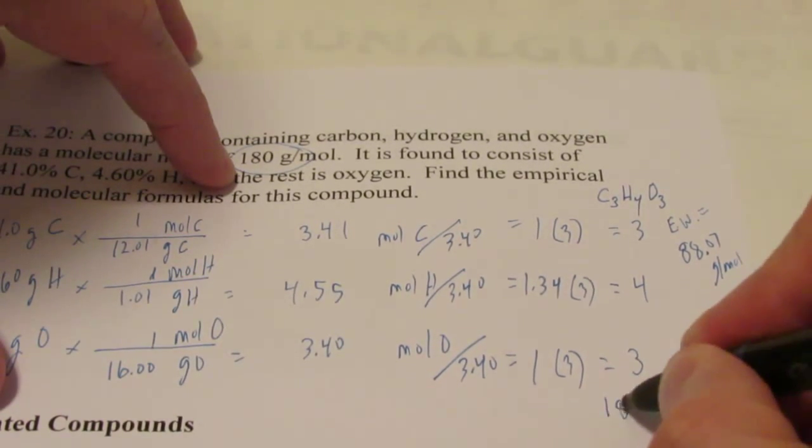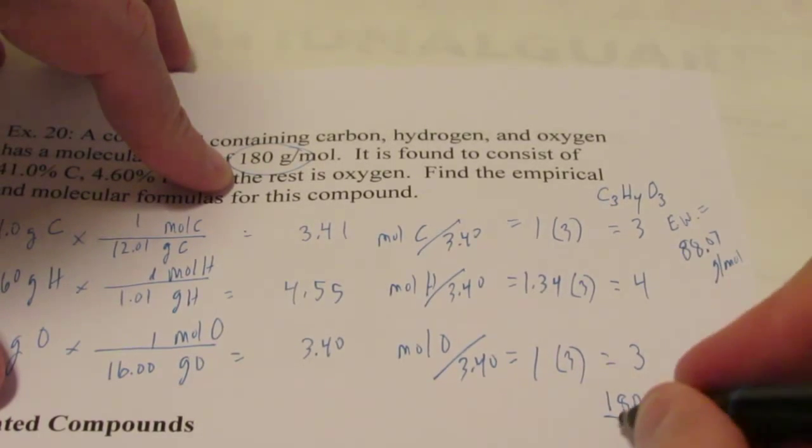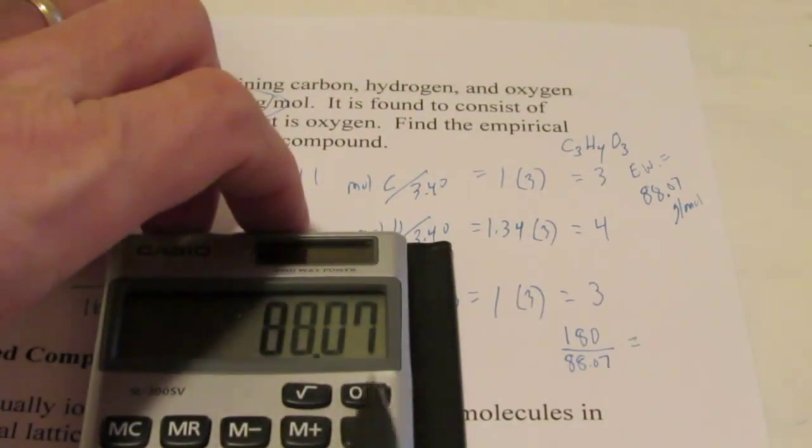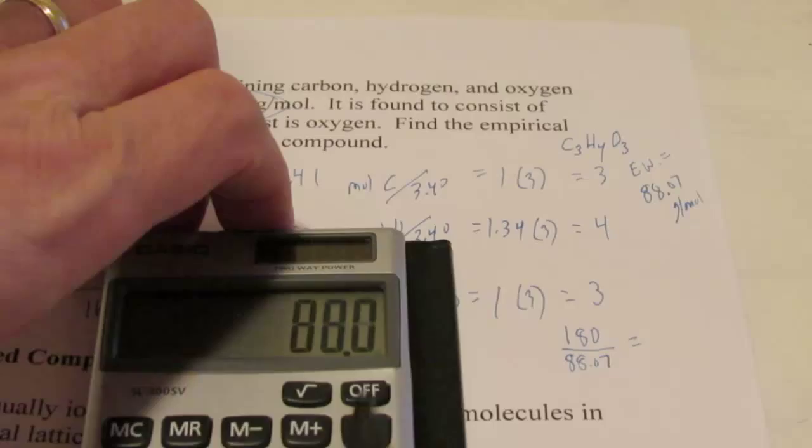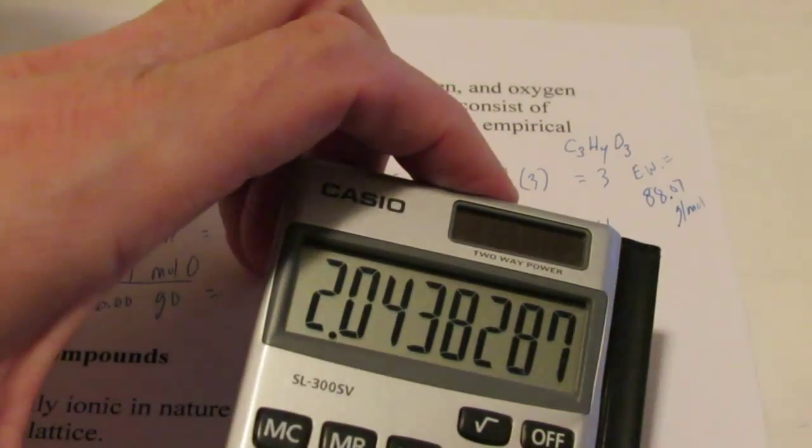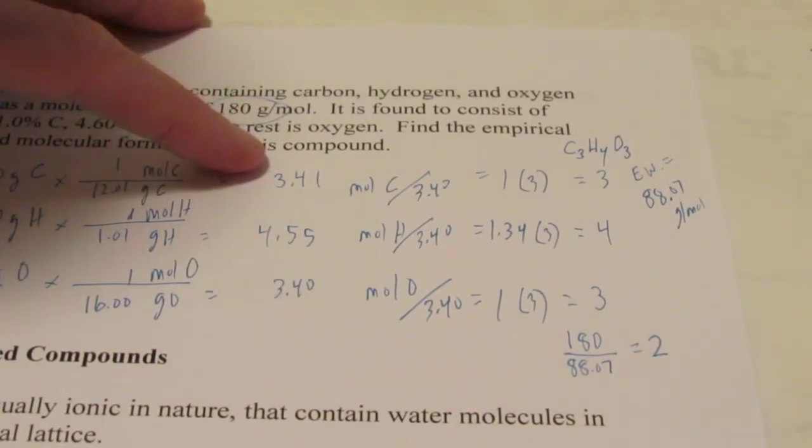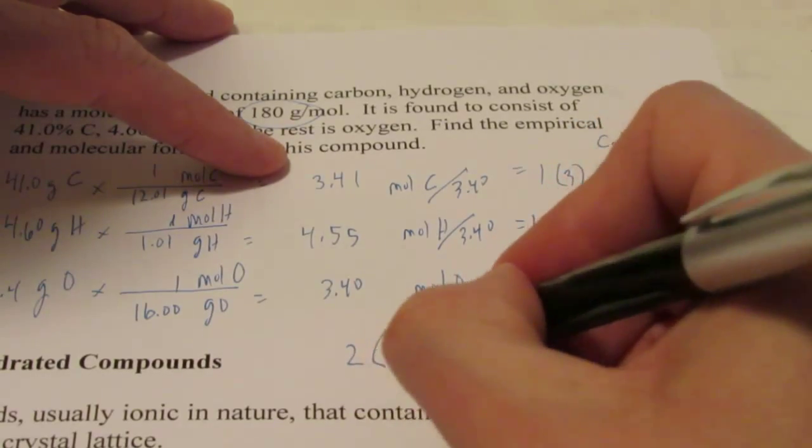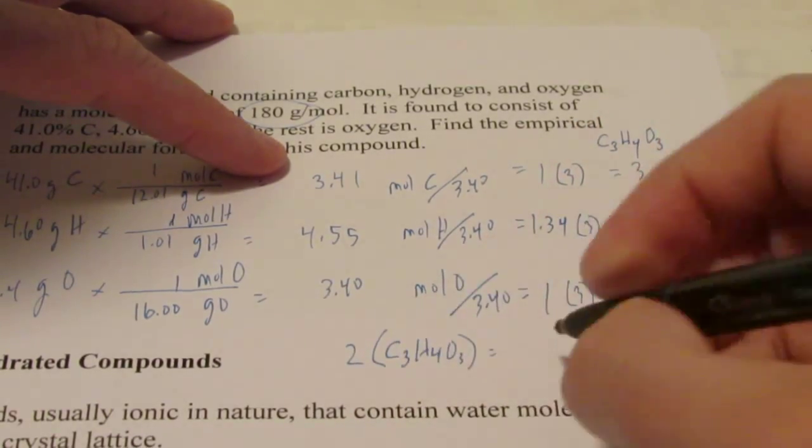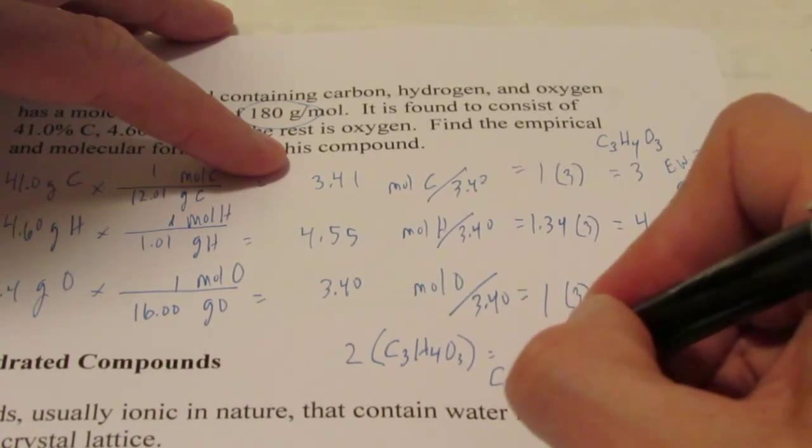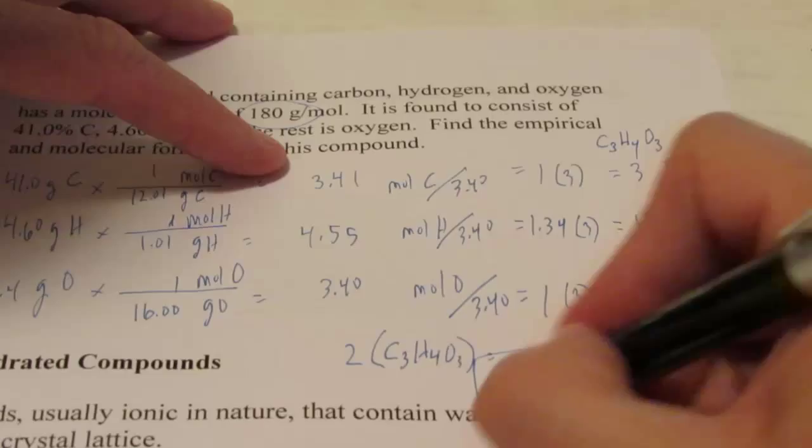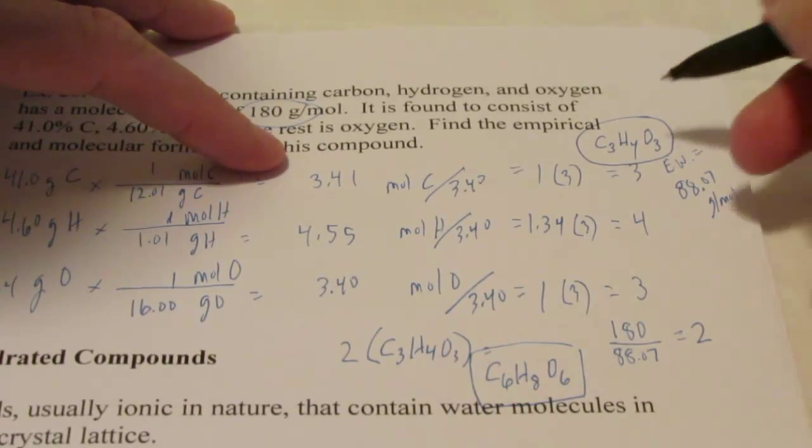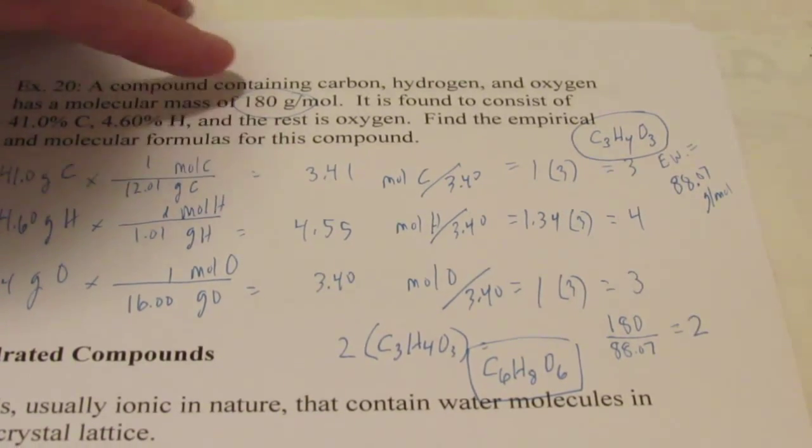No, the molecular weight is 180 grams per mole. The empirical weight is 88.07. Let's see how much bigger the molecular formula is than the empirical. Hey, 2 times bigger. So that means my molecular formula is 2 times bigger than C3H4O3, or C6H8O6. That's my molecular, the actual ratio. That's my empirical, the lowest whole number ratio. And that's how we do it.